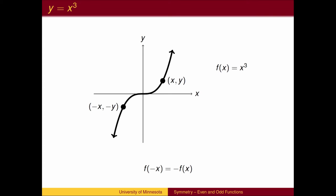The cubic function has its left side look like the right side, but it is pointed down rather than up. The y-value on the left is the opposite of the y-value on the right. We could create the left branch by taking each point on the right branch using the origin as the mirror. A function such as this is said to be symmetric with respect to the origin.